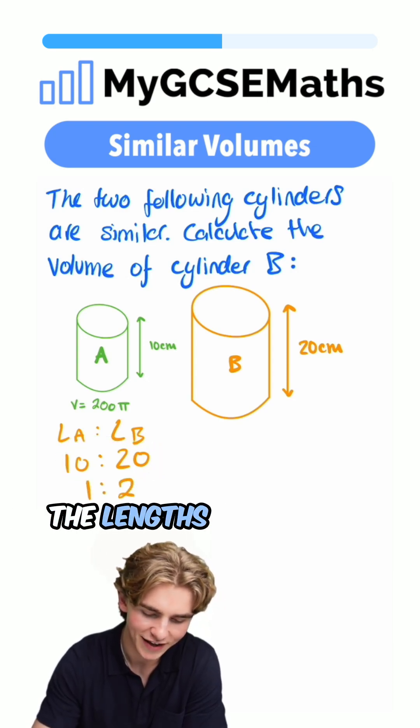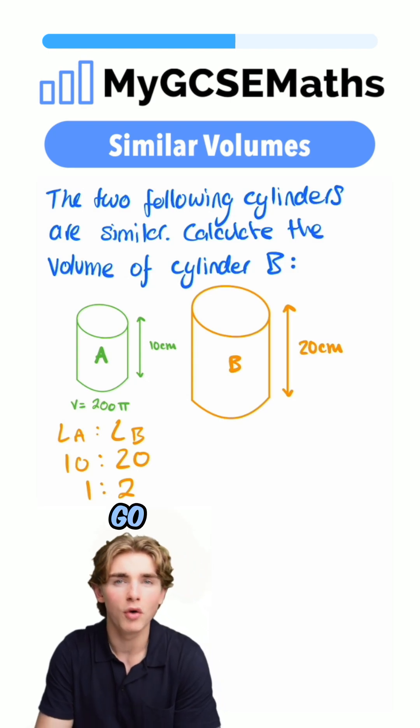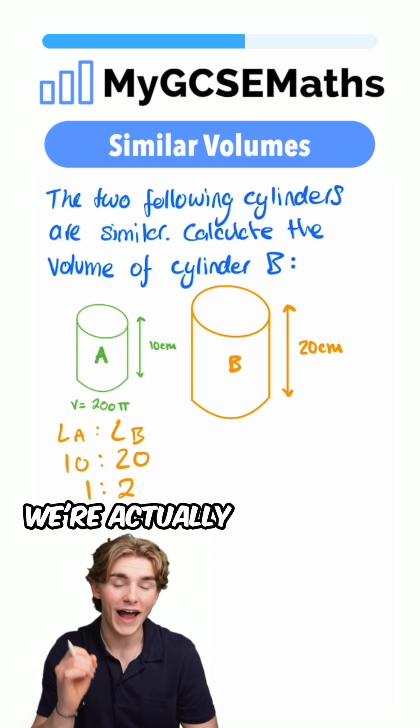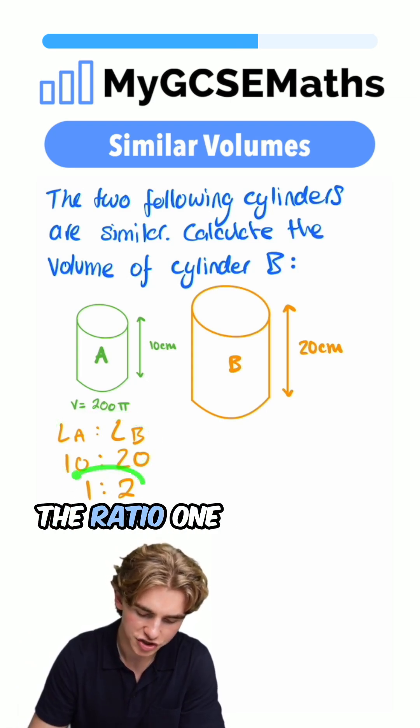So we know that the lengths in shape B are double the lengths in shape A. Now, how do we go from the ratio in the lengths to the ratio in the volumes? We're actually going to have to cube this ratio. We're going to have to cube the ratio 1 to 2.